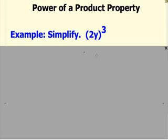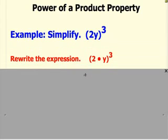In this first example, we're simplifying the product of 2y raised to the power of 3. We can rewrite the problem like this, so it's more obvious that we have a product here.